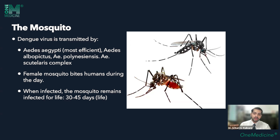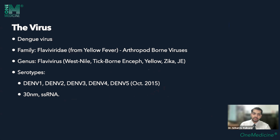Aedes requires blood to incubate the growing eggs inside its belly. Once infected, the mosquito remains infected for the next 30 to 45 days — essentially its entire life cycle. The dengue virus belongs to the family Flaviviridae. 'Flaviviridae' comes from 'flavus,' meaning yellow, and it is an arthropod-borne virus — an important arbovirus.